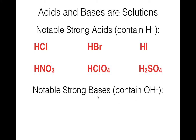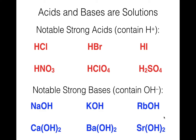Strong bases will contain the hydroxide ion. That's why when you combine an acid and a base, we get neutralization reactions — they form water, because the acid has a hydrogen ion and the base has a hydroxide ion. Notable strong bases are group 1 and 2 metals combined with the hydroxide ion: sodium hydroxide, potassium hydroxide, rubidium hydroxide, and with group 2 metals — calcium hydroxide, barium hydroxide, and strontium hydroxide. Make sure you can recognize acids and bases from their formulas.